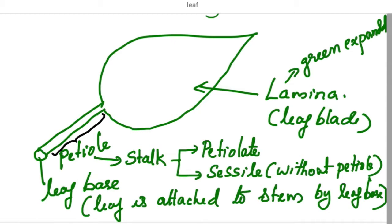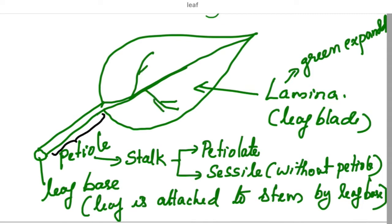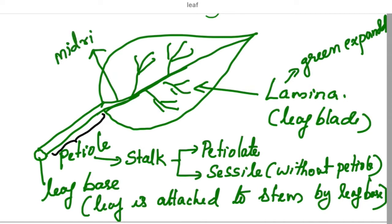This lamina contains veins and veinlets. There is a prominent vein called the midrib. So the main vein is called the midrib, and the branches are called veins.